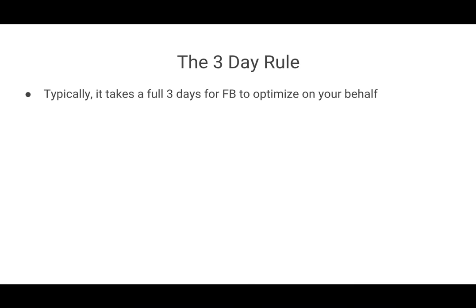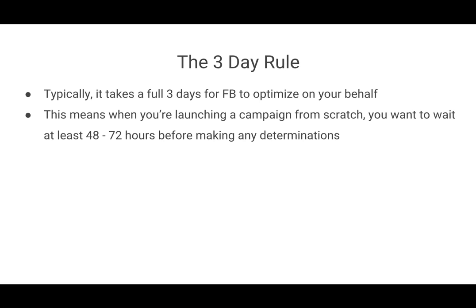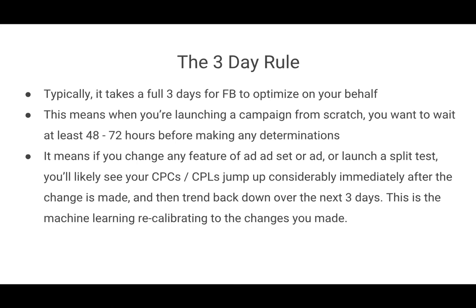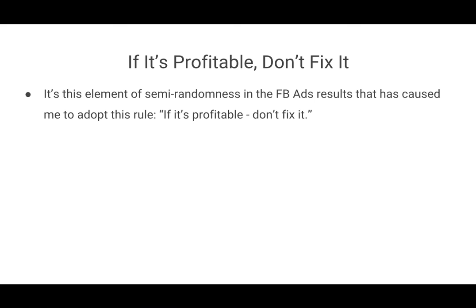As I mentioned, typically it takes a full three days for Facebook to optimize on your behalf, which means anytime you're launching a new campaign or new optimization from scratch, you want to wait at least 48 to 72 hours before making any determinations on that campaign. If you change any feature of an ad set or launch any split test, you'll likely see your cost per clicks, cost per leads, or cost per conversion events jump up considerably immediately after the change, then trend back down to a more positive status over the next three days — this is just the machine learning recalibrating.